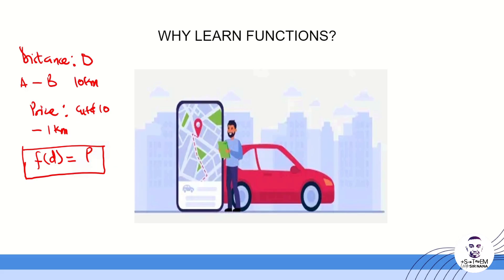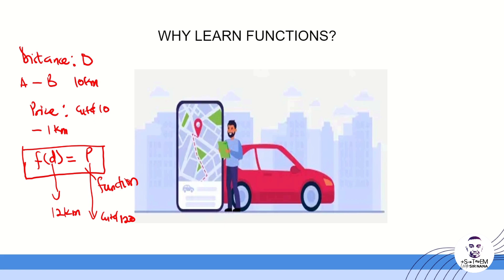We can also include other elements like traffic or the type of vehicle, but let's use this simple function. This function models d, which represents the distance. For instance, if you are moving 12 kilometers, you have to pay a certain price — if one kilometer is 10 Ghana cedis, then for 12 kilometers you pay 120 Ghana cedis.